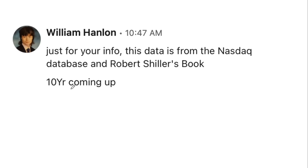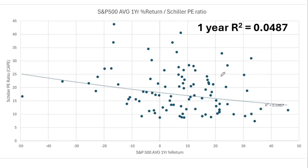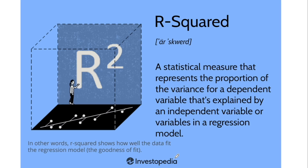Let's dig deeper and look at the 10 and 15-year returns to see what we can expect from investing in the S&P 500 at current Shiller ratios. This data is from the NASDAQ database and Robert Shiller's book. Now we go to the analysis with R-squared, which shows the fit of the thesis and the data. We can see that if you look at one-year returns, those returns are all over the place no matter the Shiller ratio. Thus, we cannot estimate short-term returns using the Shiller ratio. The market is a voting machine in the short term, a weighing machine in the long term.